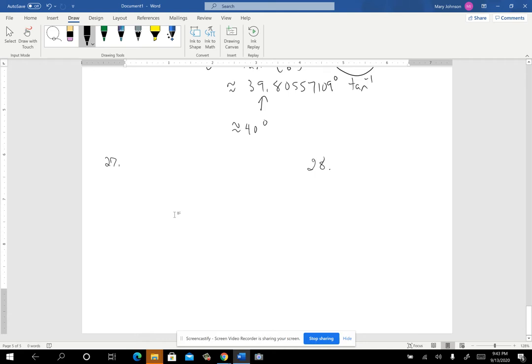Problem 27 says a circle has a radius of 40 centimeters. So let's think about that circle. It would be 40 centimeters in radius. That means just this piece is 40.